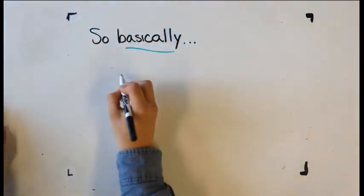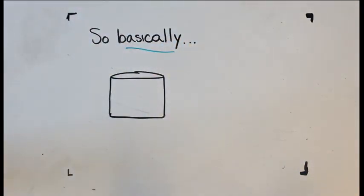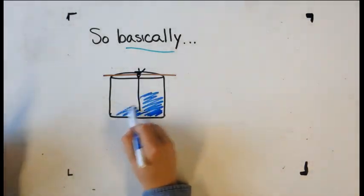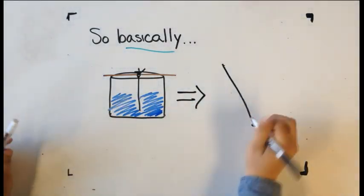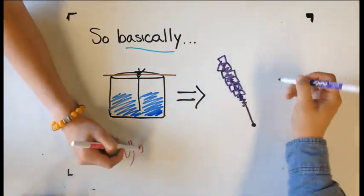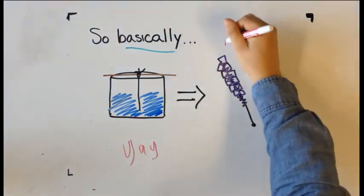Creating rock candy is pretty simple. Basically, you're putting a sugar coated string into sugar saturated water and letting it sit for roughly 10 days until most of the water has evaporated and you're left with a crystallized sugar stick. This is your rock candy.